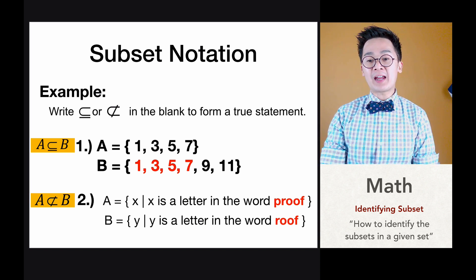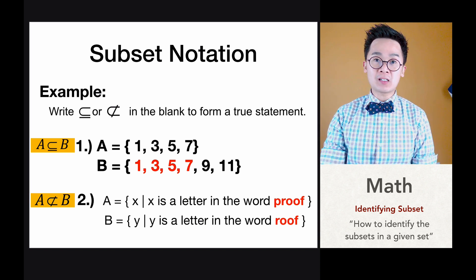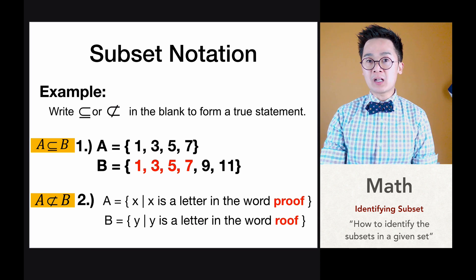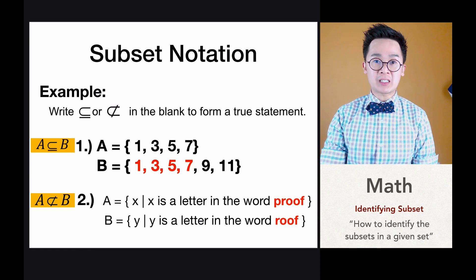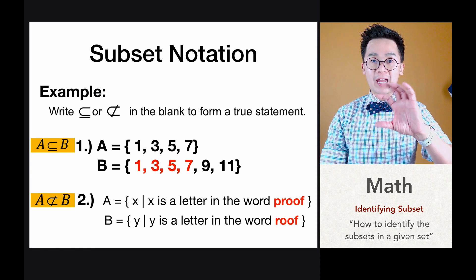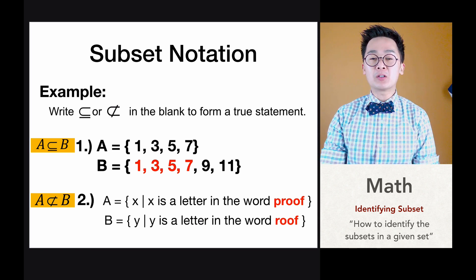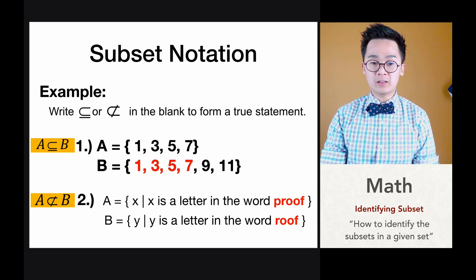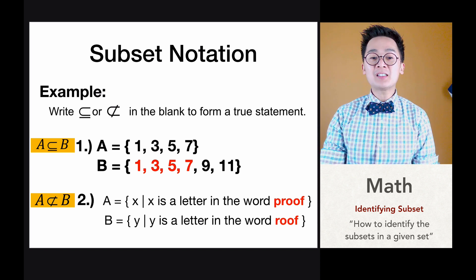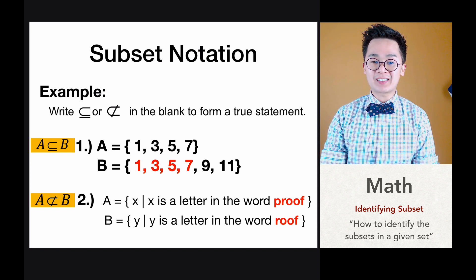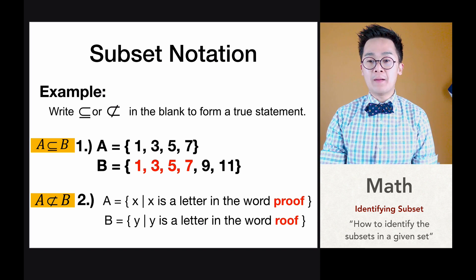So we can say that in a subset, the notation is not commutative, which means you cannot switch them around to get the same result. This is how we write the subset notation based on this symbol.